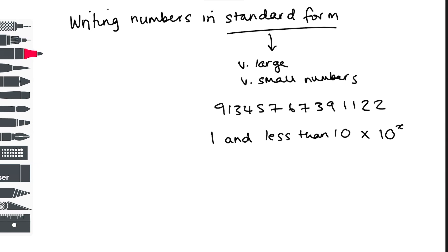To show you an example, 3 million, which is 3 followed by 6 zeros, could be written as 3 times 10 to the 6. Whereas 0.0001 is written as 1 times 10 to the minus 4.